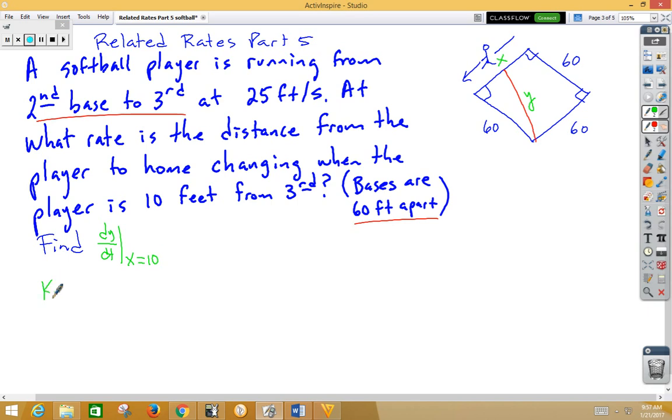And our known rate of change is that the player is running at 25 feet per second. Now, notice that the distance as the player is running from second to third, that distance for x is getting smaller. So because it's getting smaller, we're going to have a negative rate of change. So dx/dt is a negative 25 feet per second.